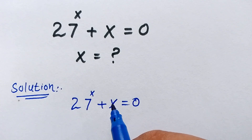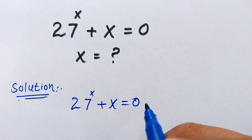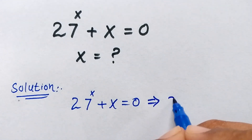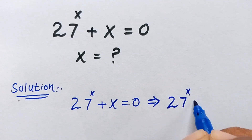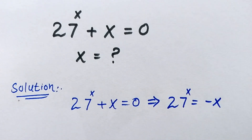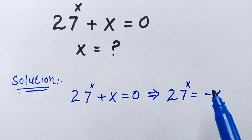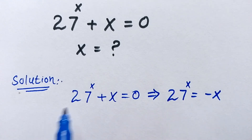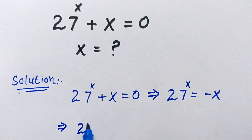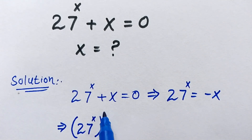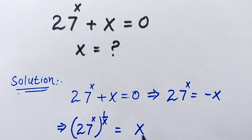To solve this, we move x to the right side, so this becomes 27 to the power of x is equal to minus x. Now we multiply 1 over x on both sides, so this becomes 27 to the power of x, into the whole power of 1 over x, which is equal to minus x to the power of 1 over x.